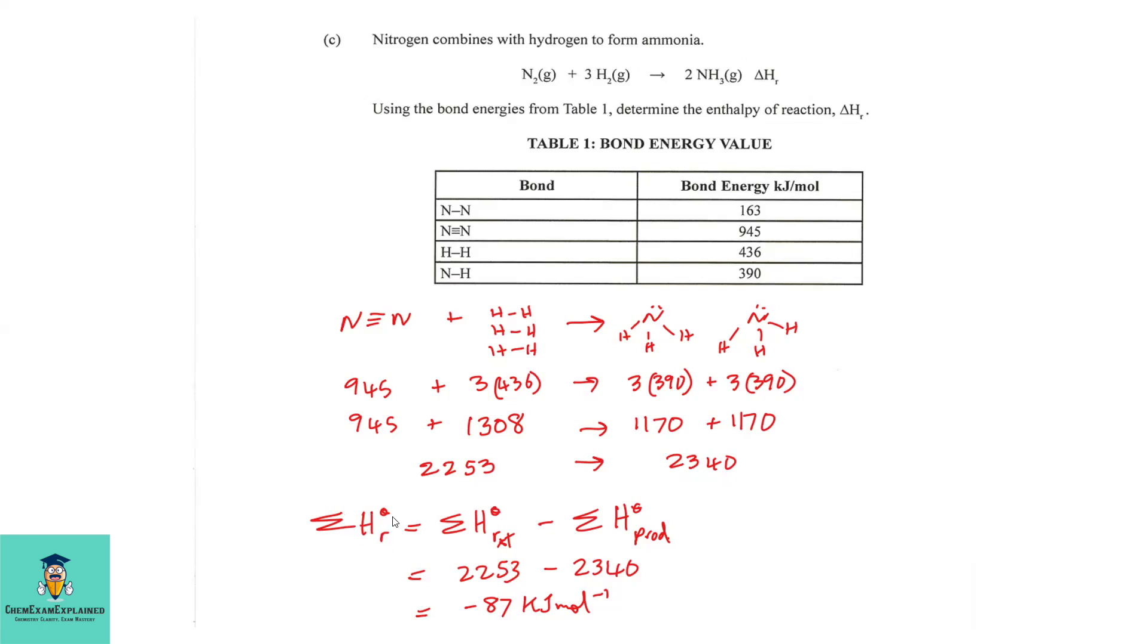We're then going to be using the equation. The sum of the standard enthalpies for the reaction is equal to the sum of the standard enthalpies of the reactants minus the sum of the standard enthalpies of the product. And so, we just plug in the information and our answer is negative 87 kilojoules per mole.